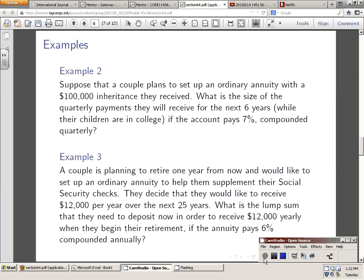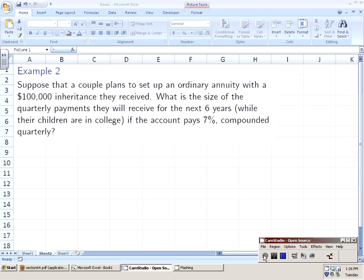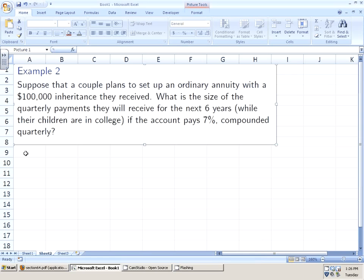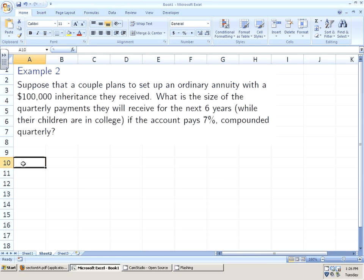Let's now continue with example two. Suppose that a couple plans to set up an ordinary annuity with a $100,000 inheritance they received. What's the size of the quarterly payments they will receive for the next six years while their children are in college if the account pays seven percent compounded quarterly?